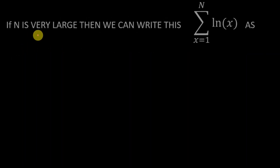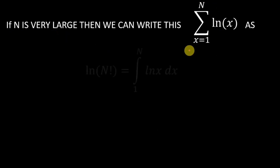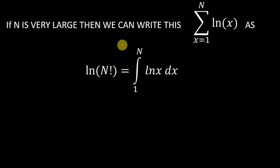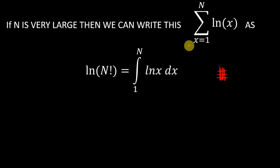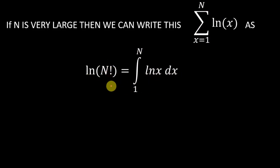Now when N is very large, we can write this summation as an integration, because when N is very large we can treat those discrete things as continuous. So we can write this summation as integration from 1 to N of log of x dx. We can write log of N factorial like this when N is very, very large.